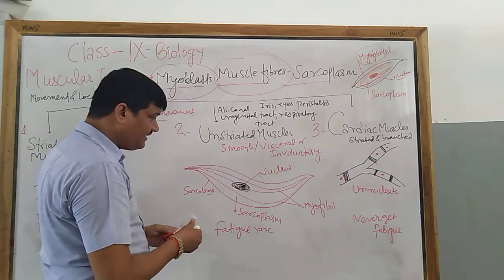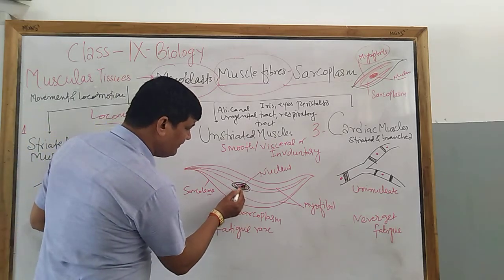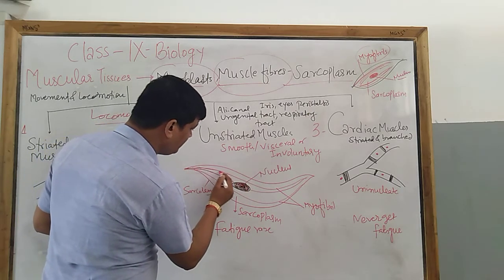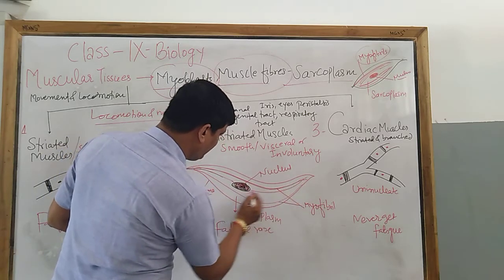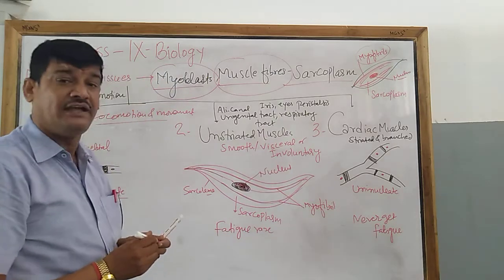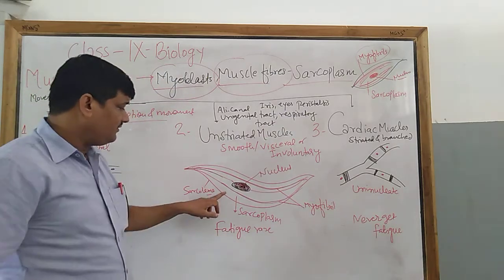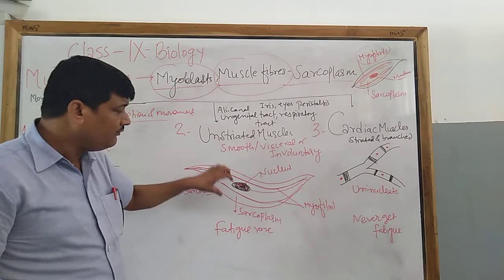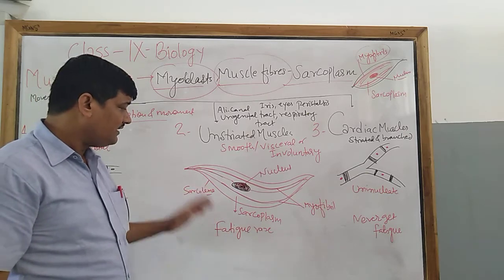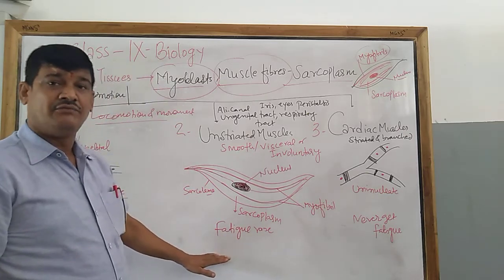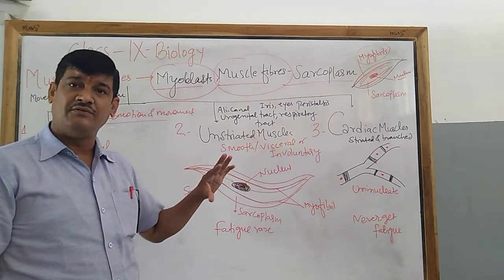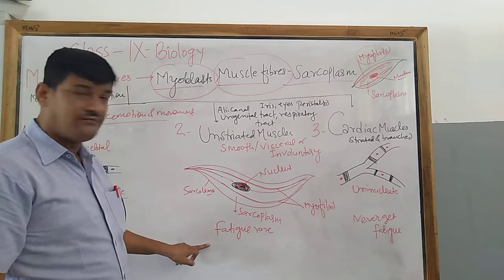There is a single nucleus at the center, so unstriated muscle is uninucleate. The fiber-like structures are known as myofibrils or muscle fibers. The membrane is called the sarcolemma and the fluid portion is known as sarcoplasm, equivalent to the cytoplasm of a cell. These muscles rarely fatigue compared to striated muscles, which fatigue very soon.